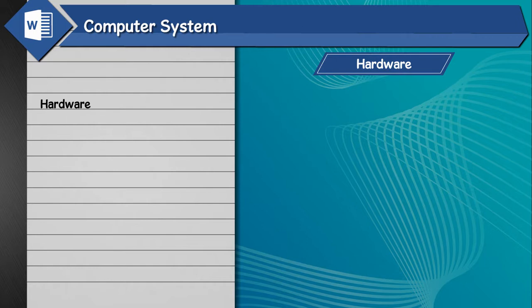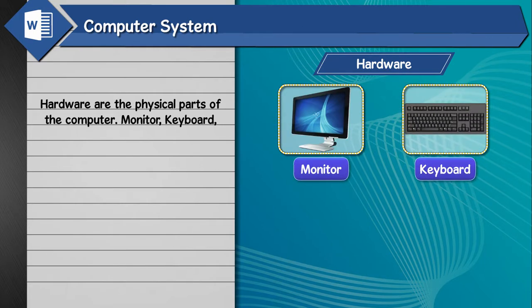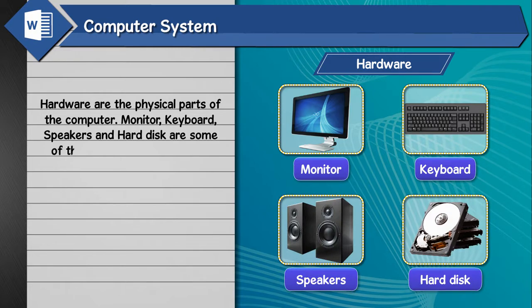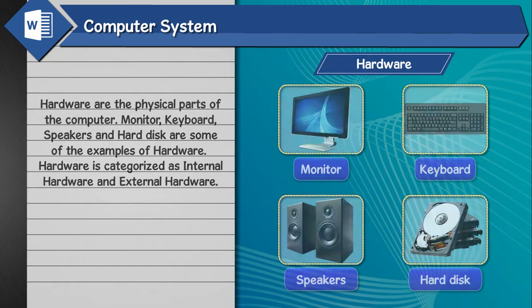Hardware. Hardware refers to the physical parts of the computer. Monitor, keyboard, speakers, and hard disk are some examples of hardware. Hardware is categorized as internal hardware and external hardware.